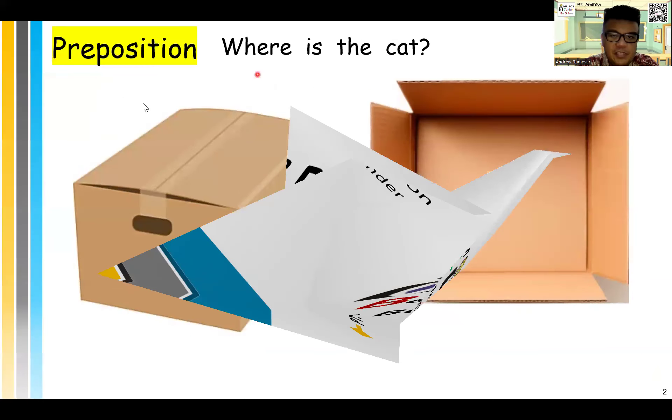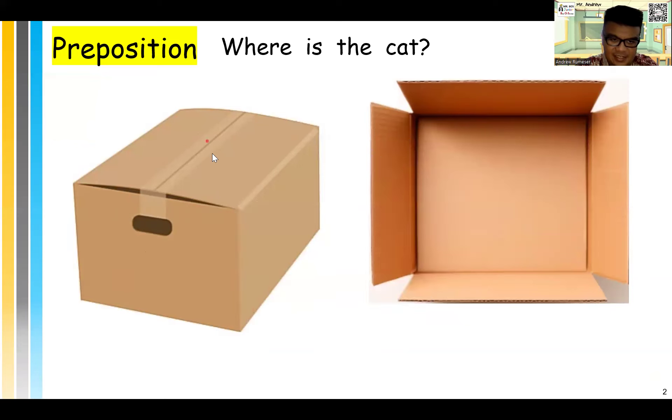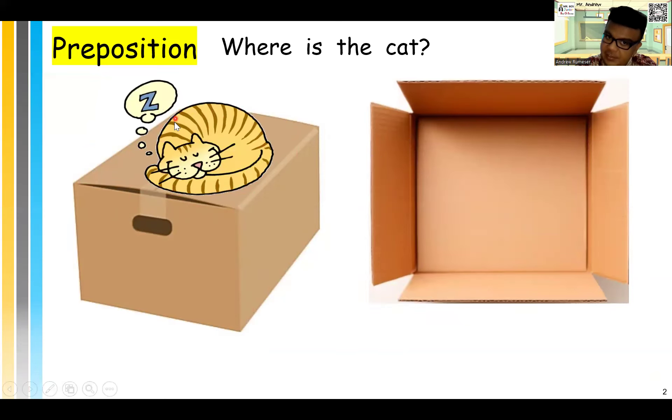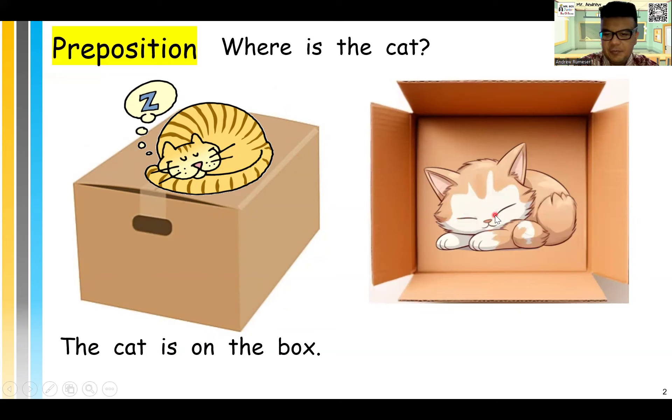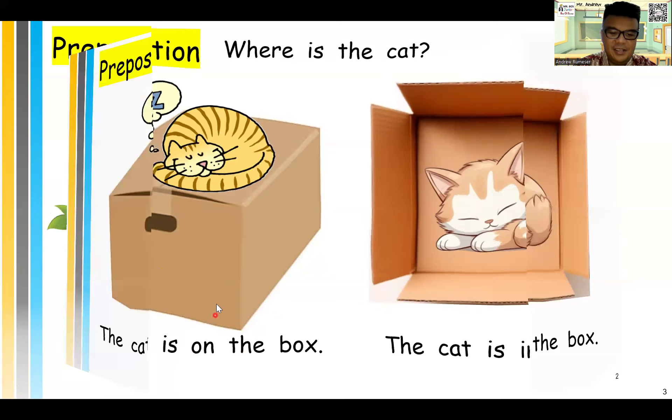So prepositions. Where is the cat? Where is the cat? If it is over here, then we say the cat is on the box. On the box, right? But if the cat is here, kids, what do we say? The cat is in the box. In. Can you say in? In. On. Can you say on? On. Very good.